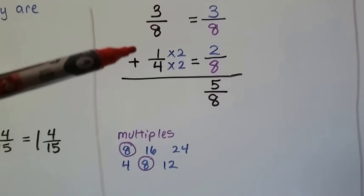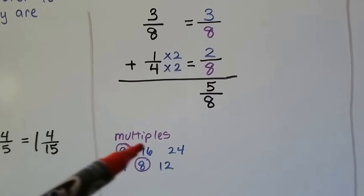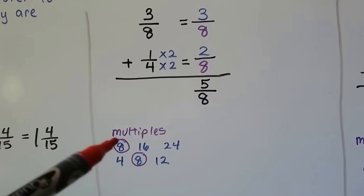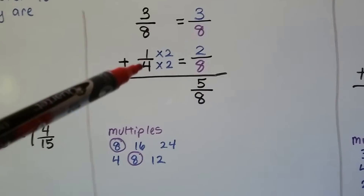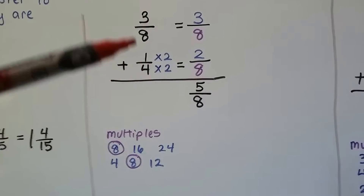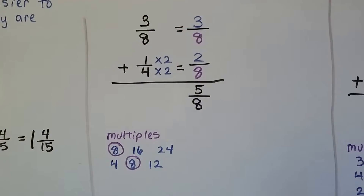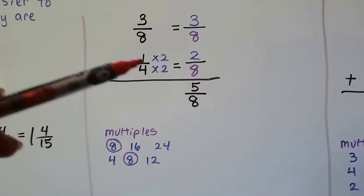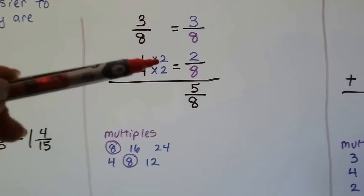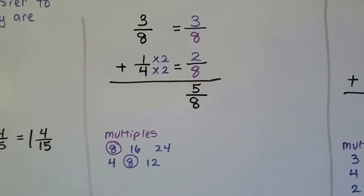Let's add 3/8 and 1/4. We list multiples of 8 and multiples of 4 and see they can meet at 8 — so the 3/8 doesn't need to change at all, it just slides across. The 4 needs to be multiplied by 2 to become 8, so 1 is also multiplied by 2, giving 2/8. Adding: 3 plus 2 is 5, so we have 5/8, and that's already reduced as far as it can go.